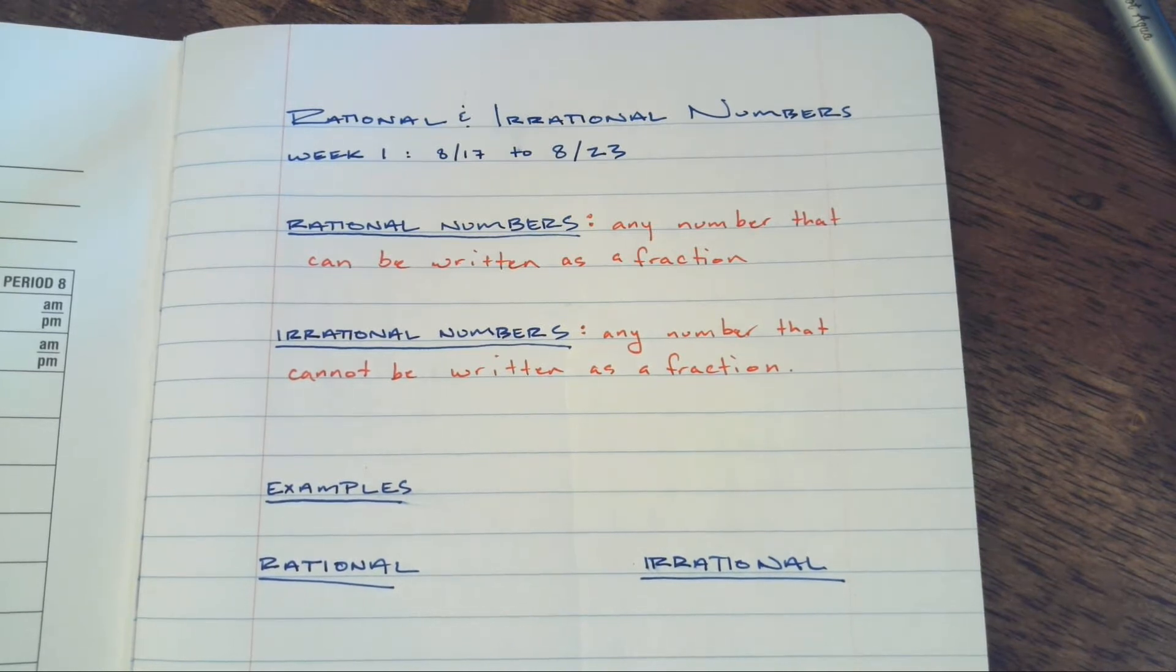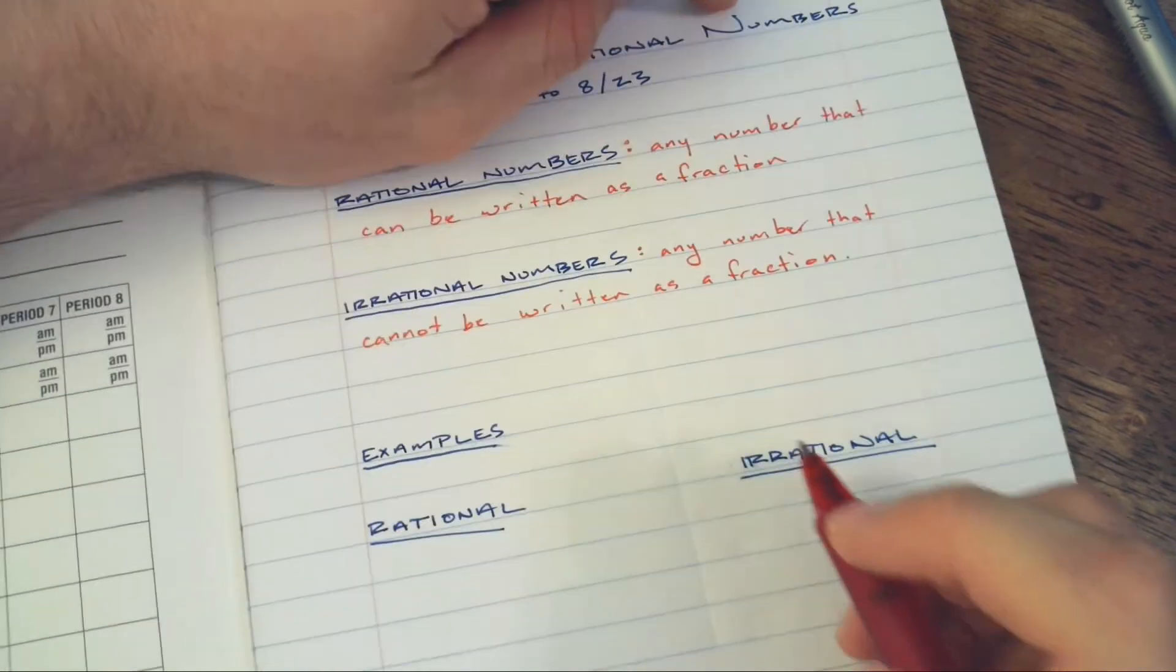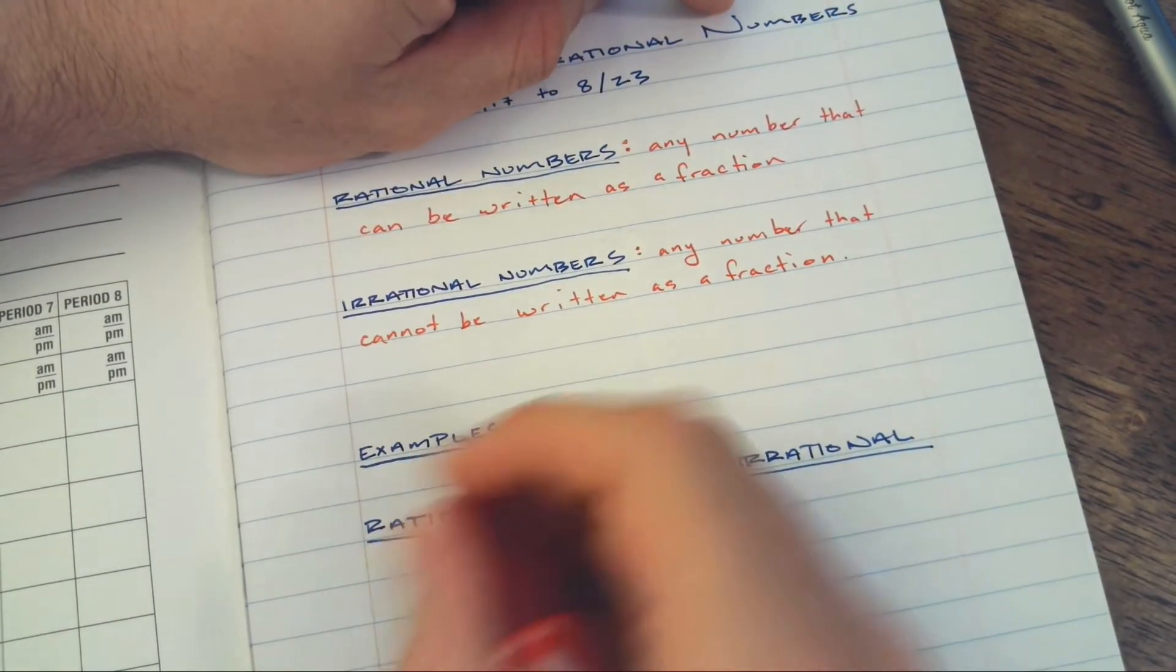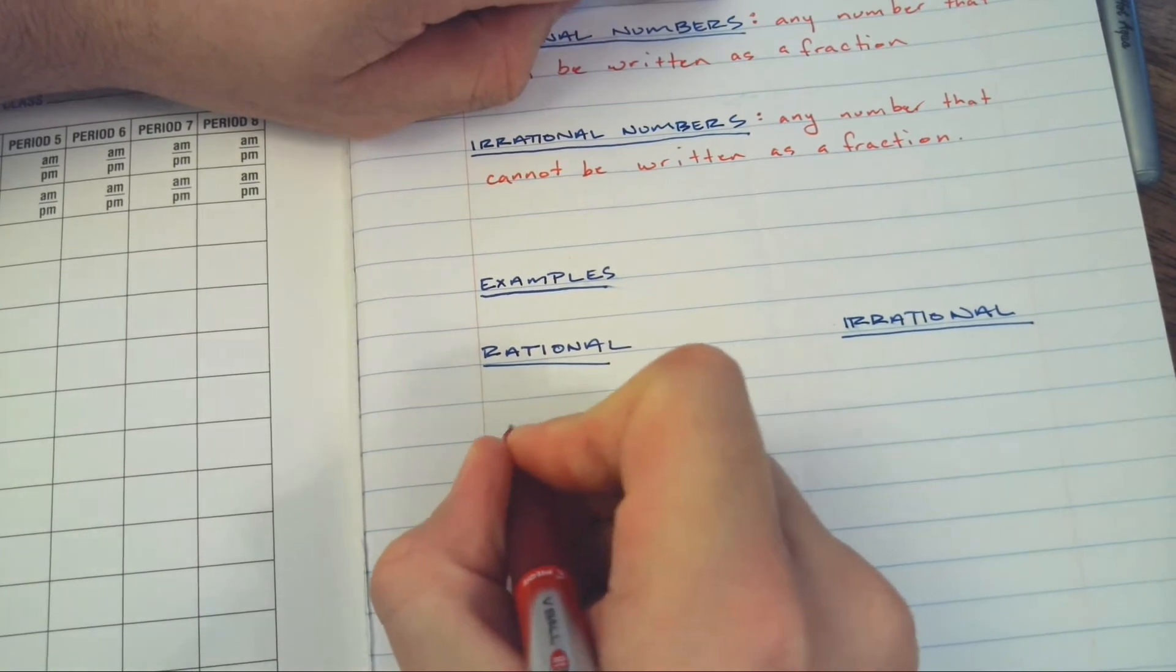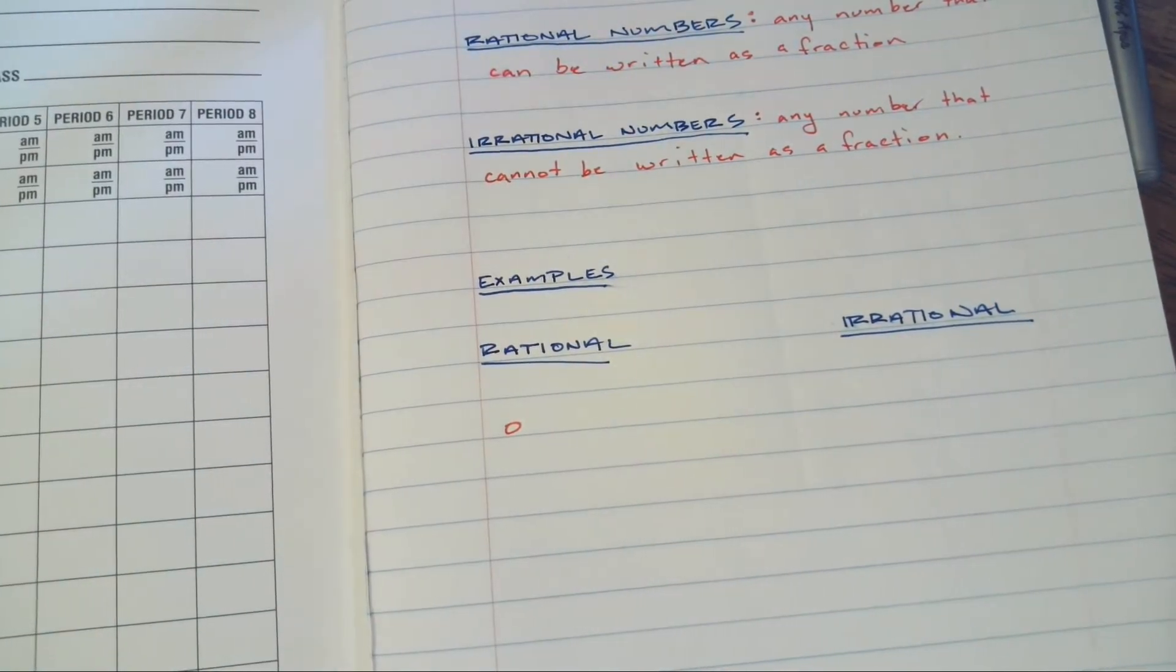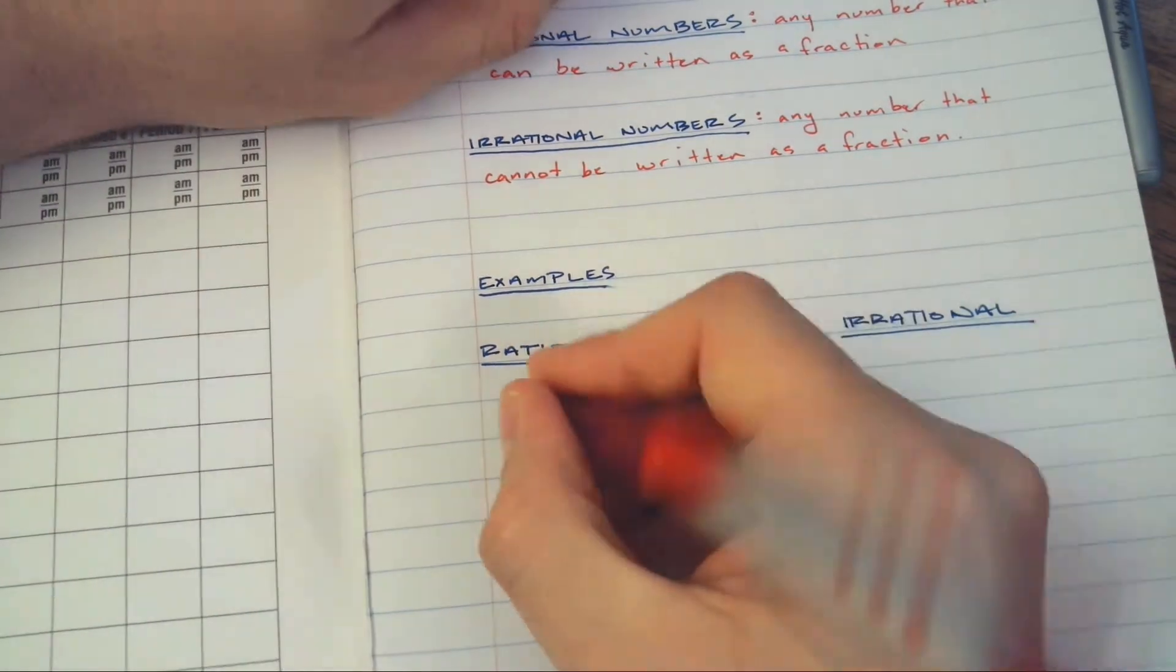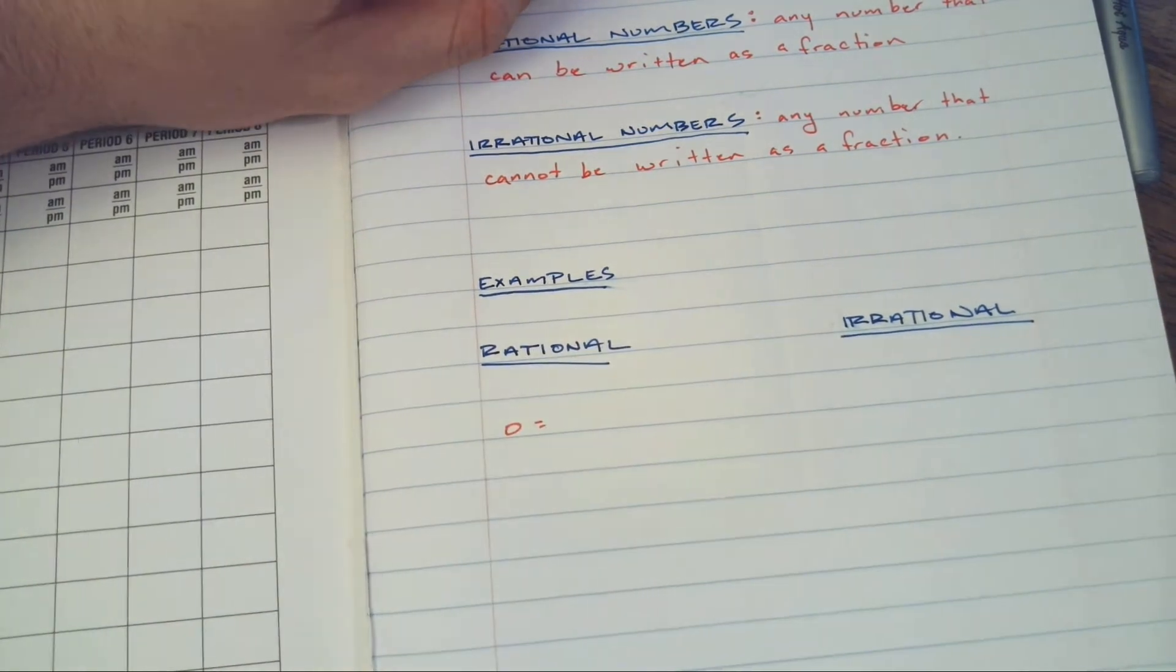Irrational numbers are the few that cannot. Let's go through some examples. Rational numbers - let's start at the beginning. Well, what's the beginning? I'm going to call it zero. Is zero a rational number? Well, yeah, it is.